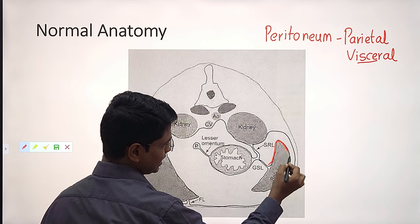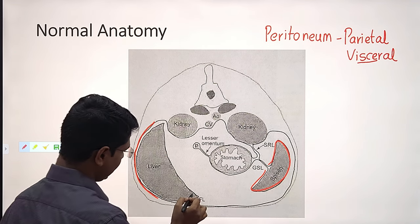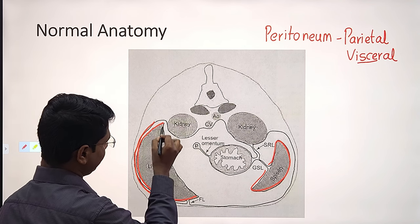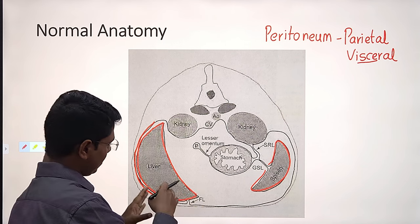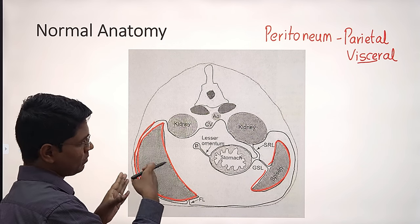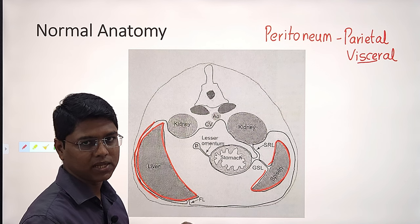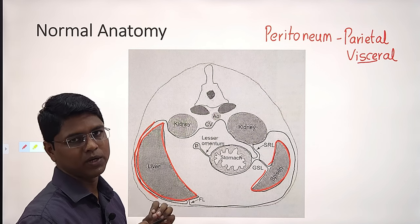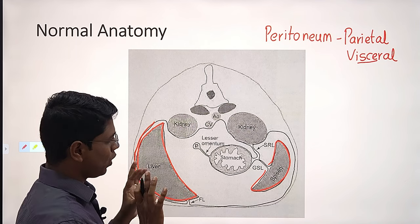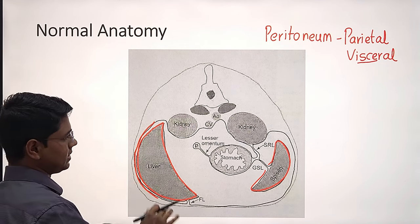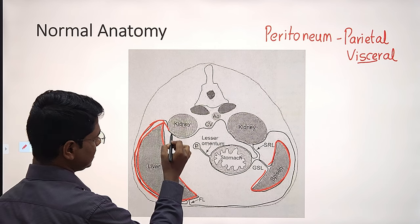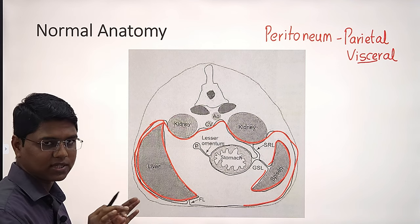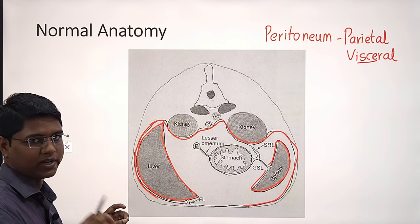You see this is visceral peritoneum, which is covering the spleen. And here, this is the visceral peritoneum which is covering the liver. So between the parietal peritoneum and the visceral peritoneum, the space is known as peritoneal space. Usually it contains some small amount of fluid for lubrication. So the organs which lie inside the peritoneum are known as intraperitoneal organs.